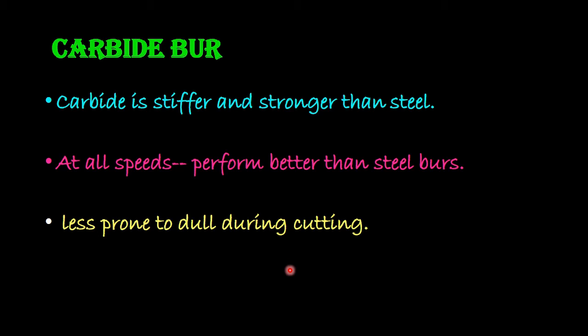The tungsten carbide powder is mixed with powdered cobalt under pressure and heated in a vacuum, because of which partial alloying or sintering takes place. After that, a metal blank is formed and the bur is cut from that using a diamond tool. This cutting is much better controlled than that of steel burs. These carbide burs have a Vickers hardness number of 1650 to 1700, and one important feature is that they are less prone to dull during cutting.